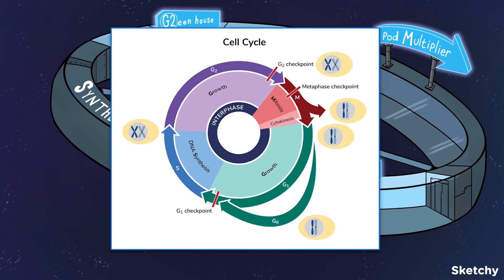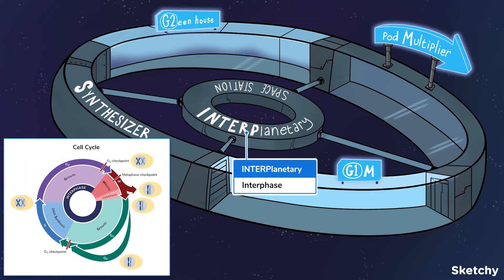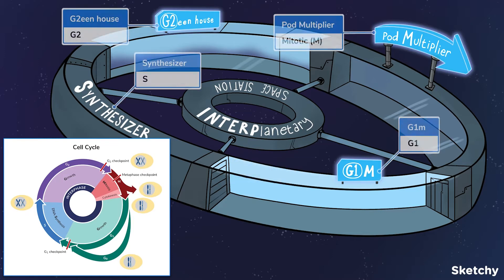This interplanetary space station is fully equipped with a brand spanking new gym, a factory for synthesizing new information, a greenhouse, and of course, a pod multiplier. Because no space station is complete without a pod multiplier. Alright, let's take a tour of the facilities.